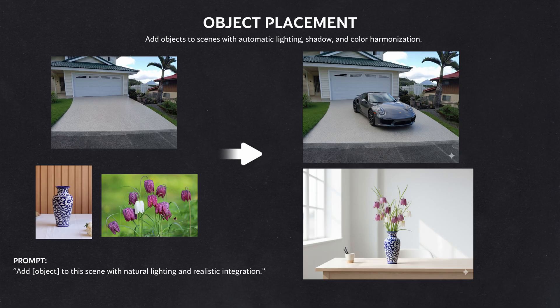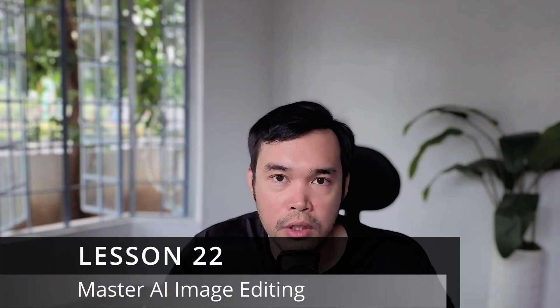Lesson twenty-two: sometimes we generate images that are almost there — at 98% — but lacking that final 2% of polish. Regenerating from the same prompt often doesn't work because the image changes too much. AI image editing is now a powerful new capability, with models like Nano Banana specializing in precise image editing. So lesson twenty-two is to master AI image editing. This is way more powerful and faster than manual editing methods — it allows you to change just the clothes, just the background, or fix small details while keeping the rest of the image intact.